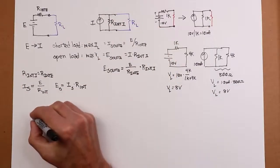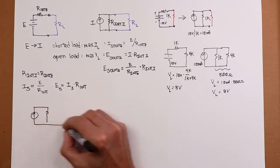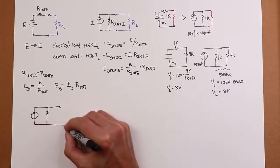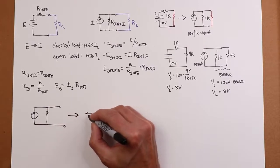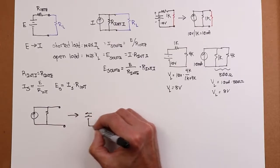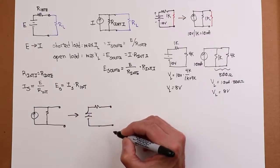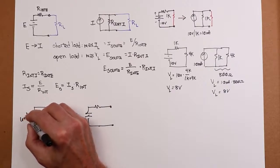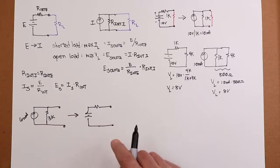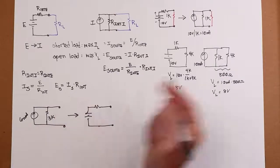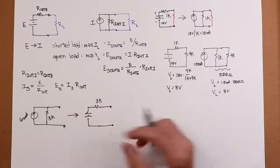Now, going the other way. Take a current source. Let's say we have a 6 milliamp current source and a 3K resistor. What do I wind up with over here? Well, the resistor gets copied over. And once again, we find the maximizing value for the source.